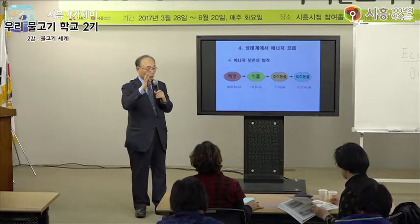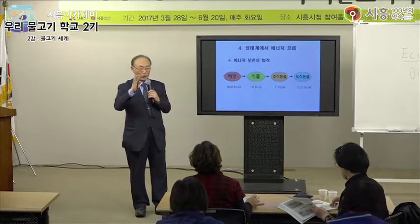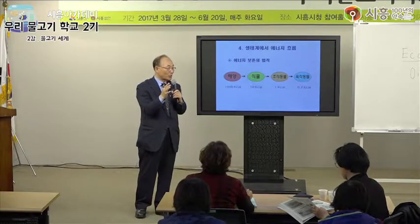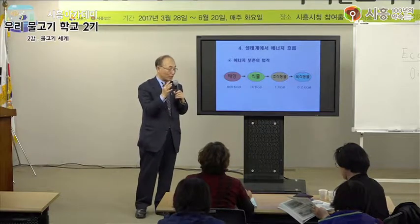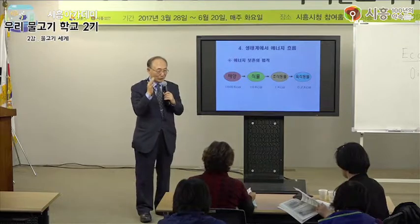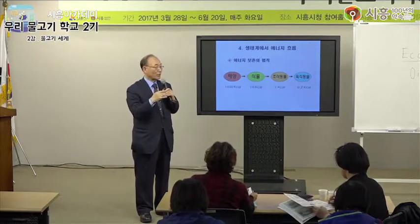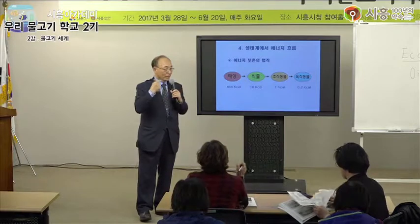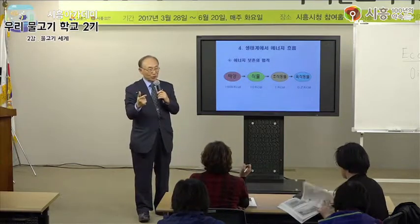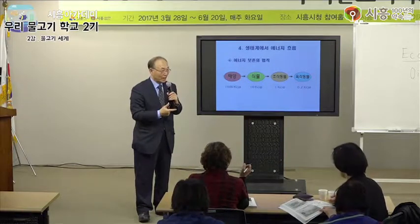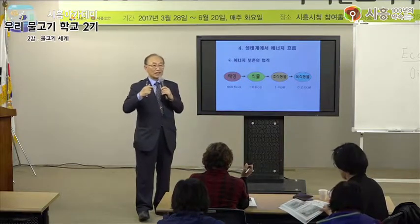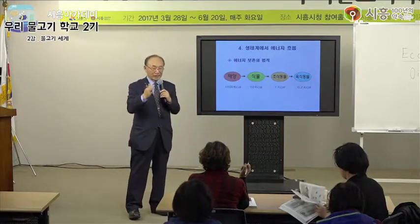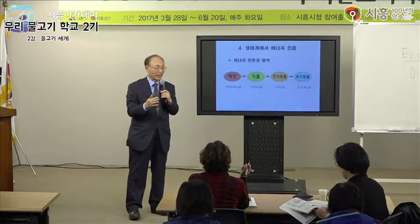화학원소, 무기물, 화학원소들이 모인 화합물 중에 유기물이 있고, 그 유기물은 탄수화물, 지방, 단백질이 있습니다. 기후적인 요소와 물리적인 요소도 있고, 생물적인 요소는 세 가지 - 생산자, 소비자, 분해자가 있습니다.